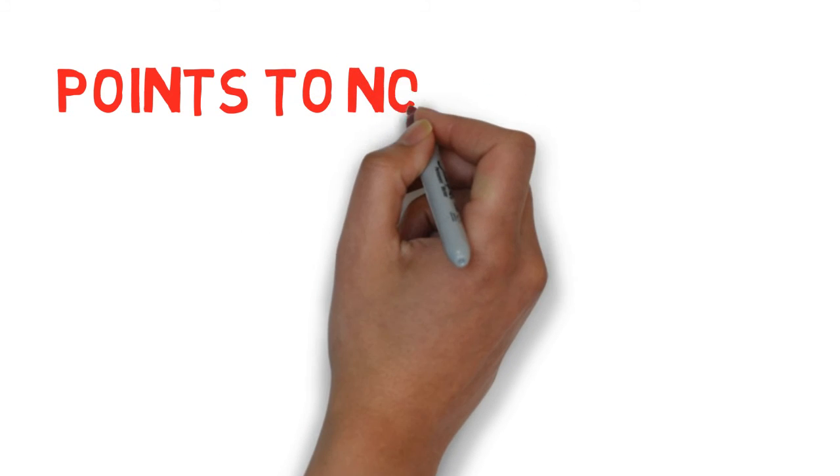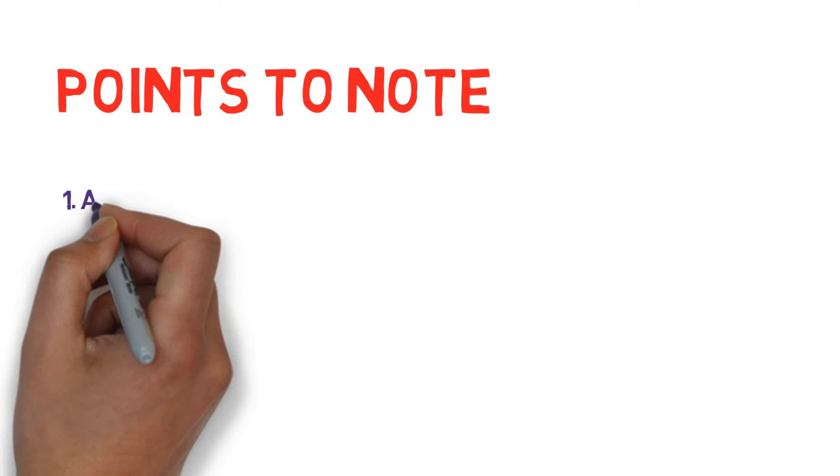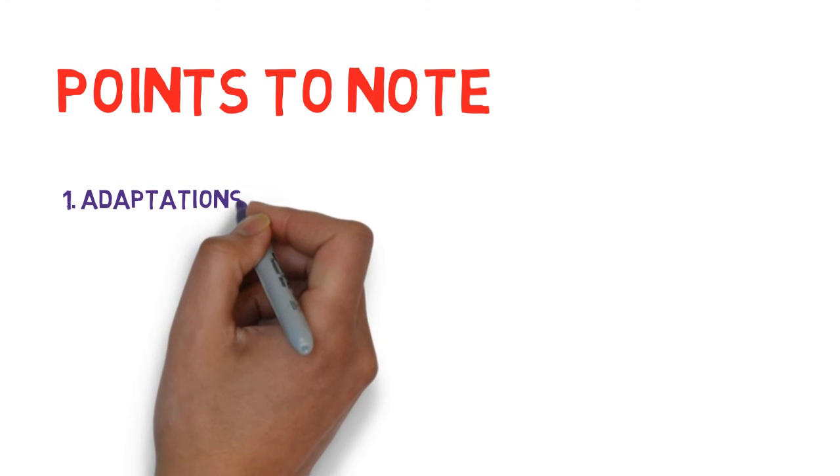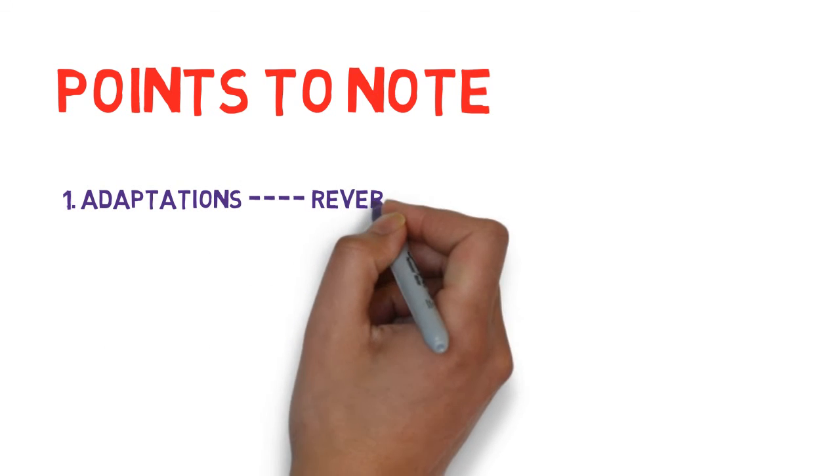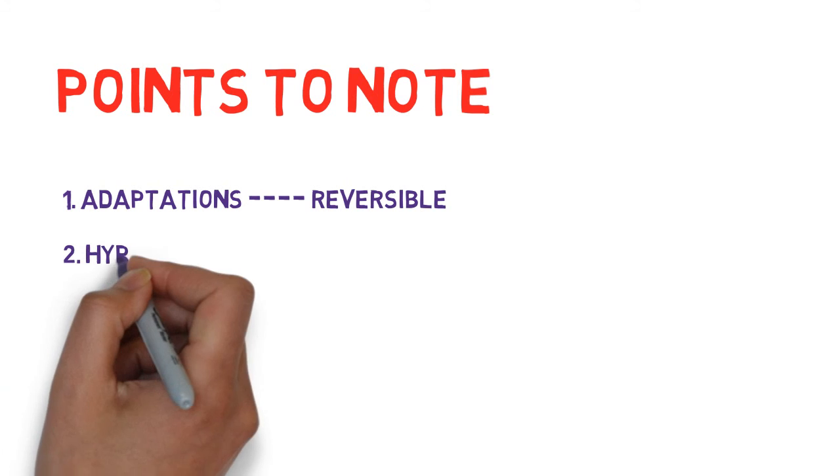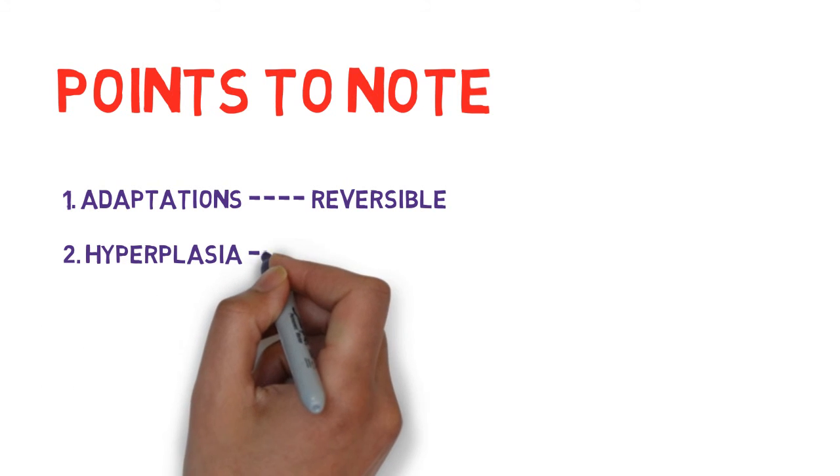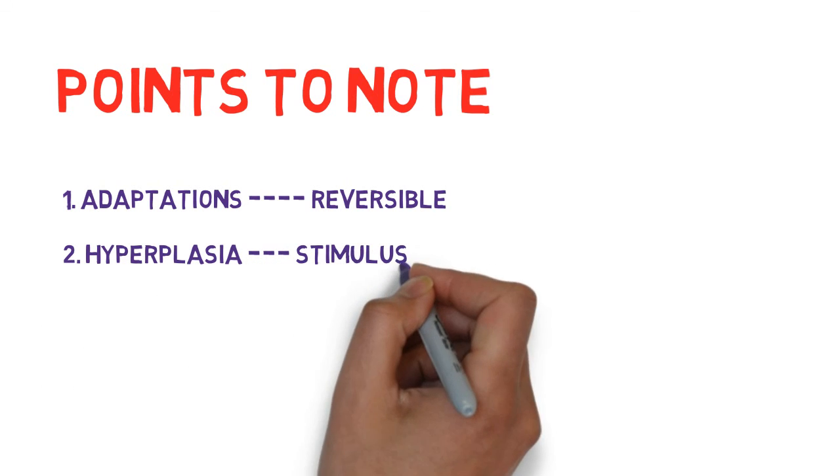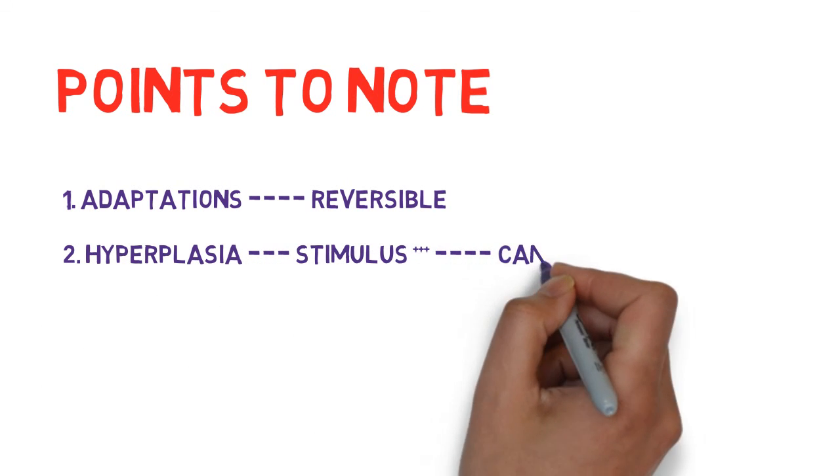I would also like to add four points to note in this particular subject. Cell adaptations are reversible. Point 2: If stimulus for pathological hyperplasia persist, it constitutes a fertile soil in which cancer might occur.